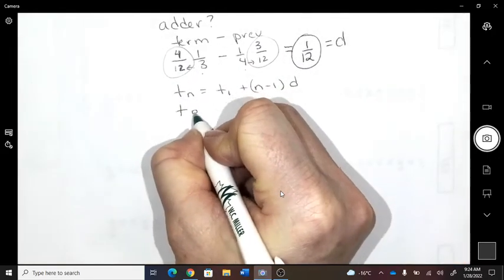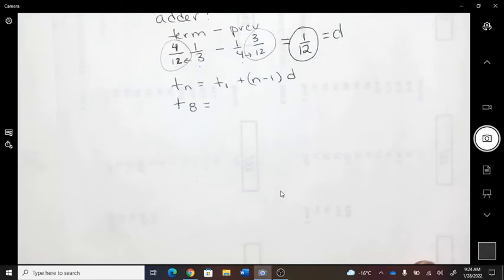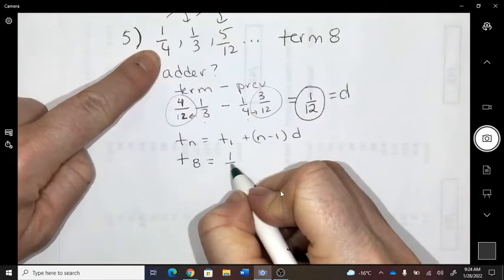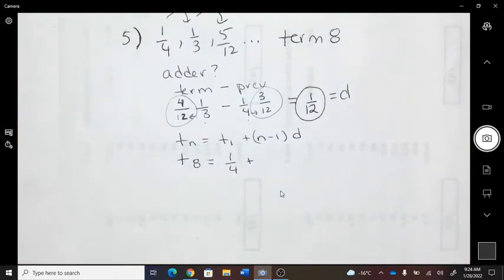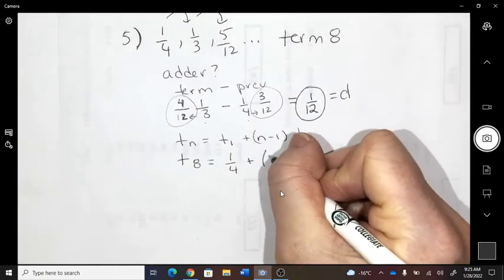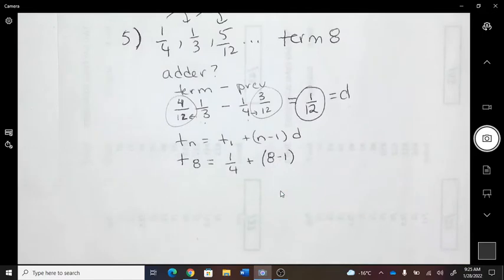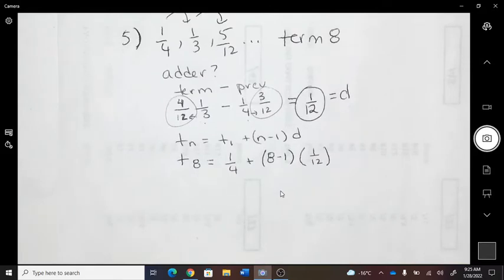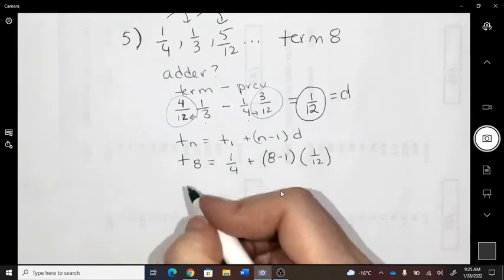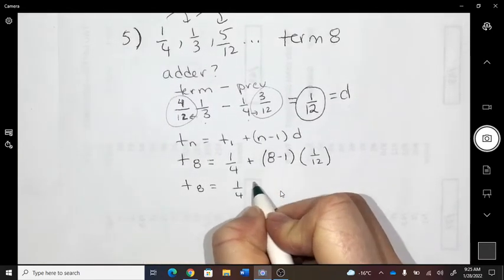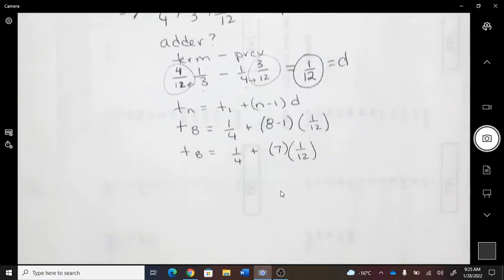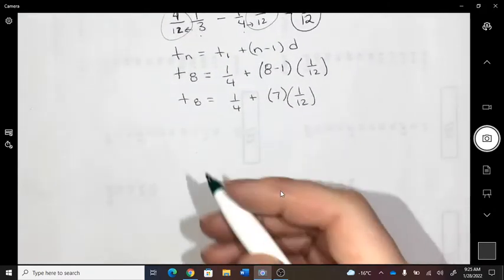So term eight equals term one. So the first term is a quarter plus n, which is the number of terms. So eight terms, and the difference is one twelfth. So I'm going to do brackets. So eight subtract one. Then I'm going to do the multiply.